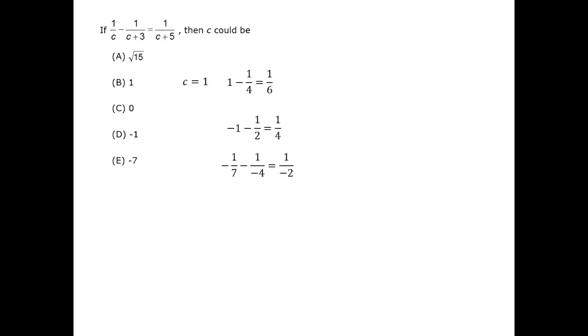If E is true, then C is minus 7. Plugging that in and moving around some minus signs tells us that minus 1 seventh plus 1 quarter equals minus 1 half. That's not true either. Therefore, we have eliminated everything except A, so the correct answer is A.